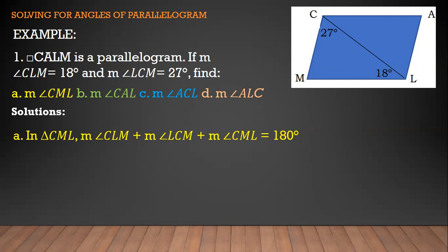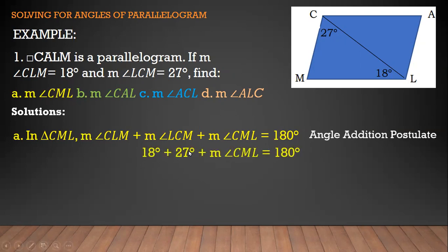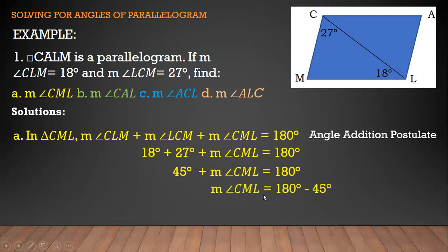Let's substitute our given values. We have angle CLM = 18 degrees and angle LCM = 27 degrees; we are looking for angle CML. So: 18 degrees plus 27 degrees plus measure of angle CML equals 180 degrees. 18 plus 27 equals 45 degrees, so 45 plus measure of angle CML equals 180. Transposing: measure of angle CML equals 180 minus 45, which equals 135 degrees.